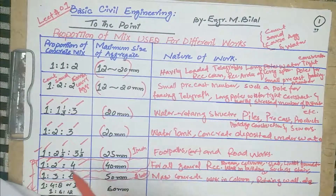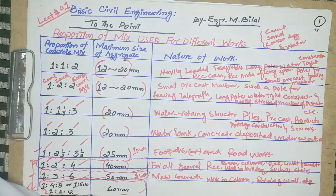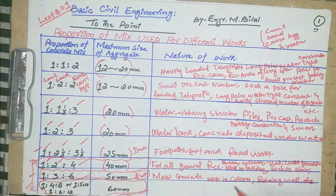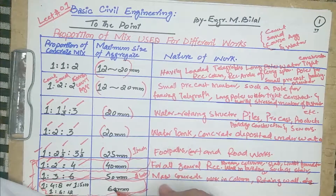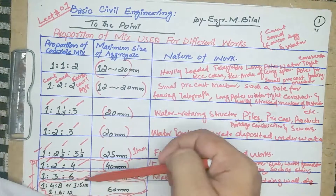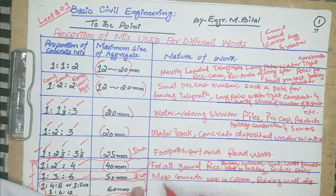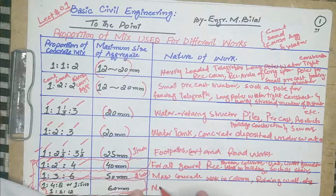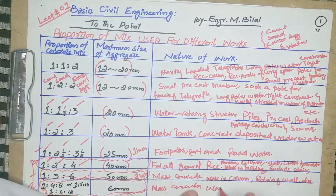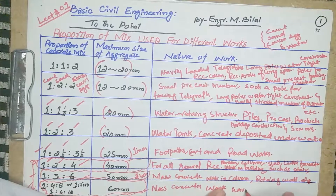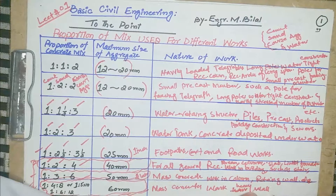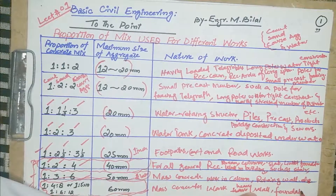The eighth and last proportion is 1:4:8. The maximum size of aggregate used for the 1:4:8, 1:5:10, and 1:6:12 proportions of concrete mix is mentioned in the table. This concrete is used in mass concrete work like heavy walls, small footings, etc.